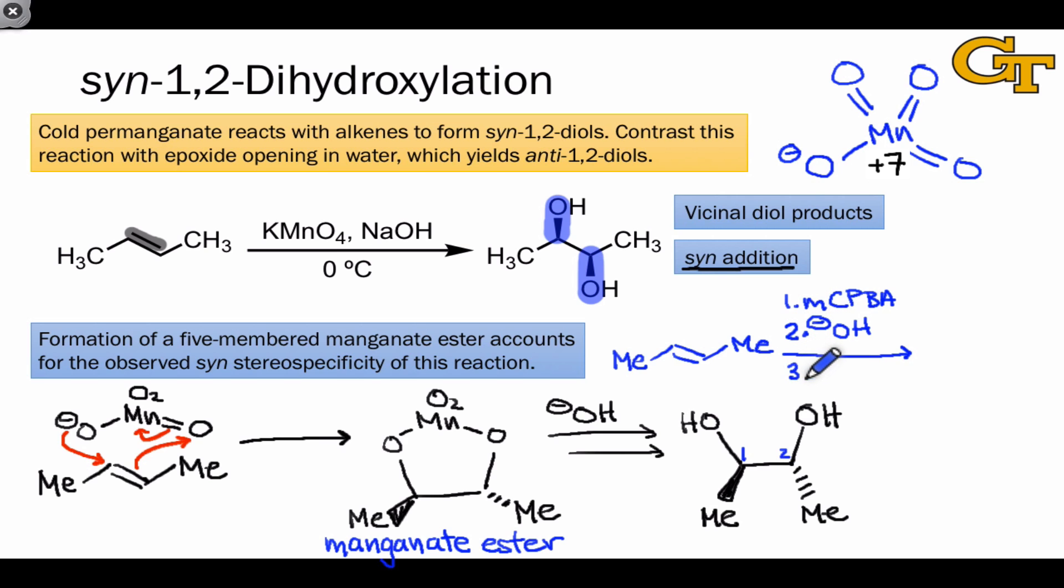the final product we'll get after acidic workup is the other diastereomer, the diastereomer in which the two methyl groups are cis rather than trans, as we've drawn them.